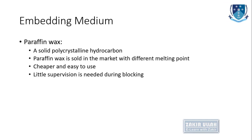Paraffin wax is a solid polycrystalline hydrocarbon. It is sold in the market with different melting points — as we learned in previous lectures, paraffin wax has a melting point ranging from 39 degrees centigrade up to 60 degrees centigrade. It is cheaper compared to other embedding media and very easy to use. However, supervision is required during blocking with paraffin wax, which is a slight limitation.